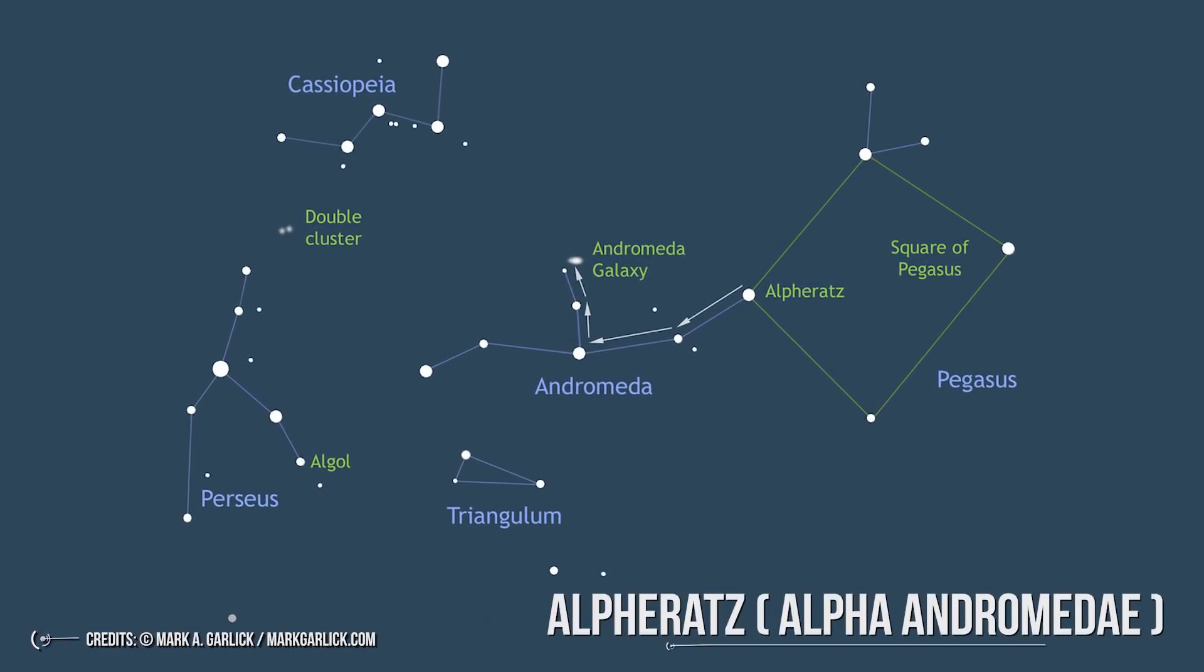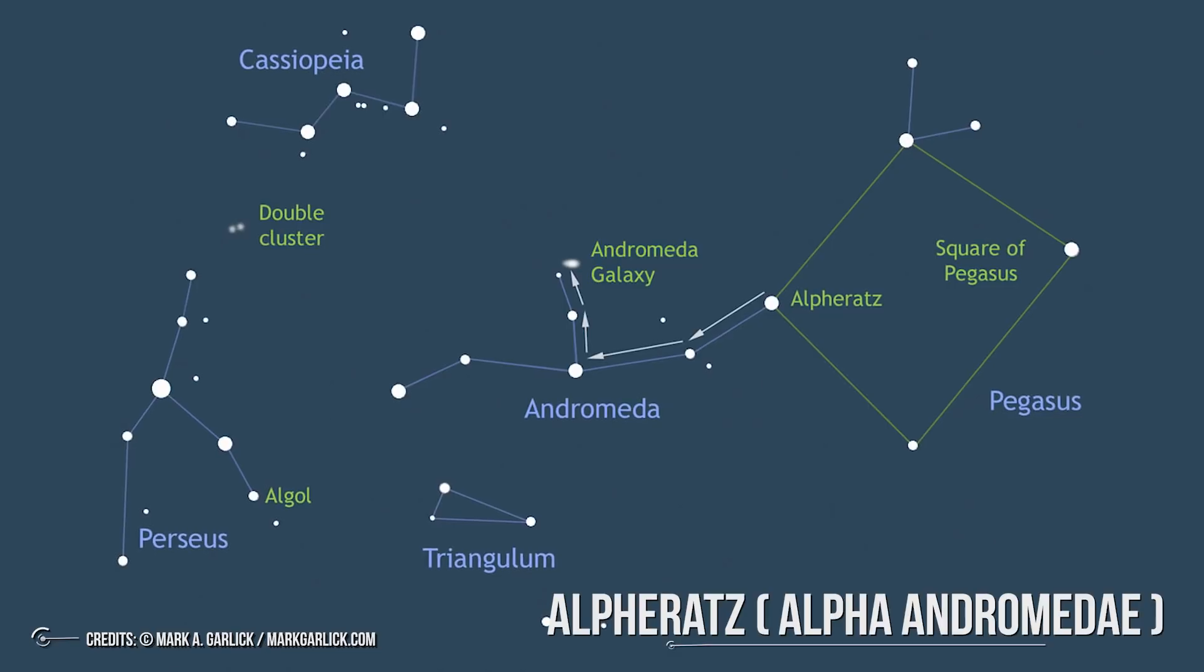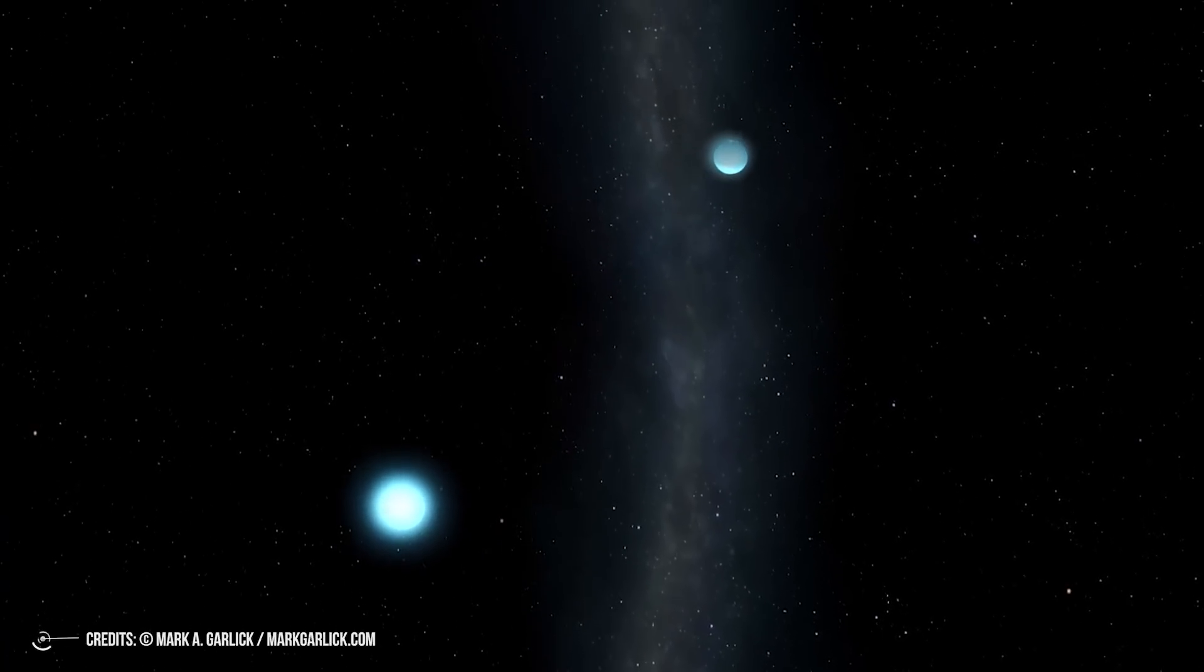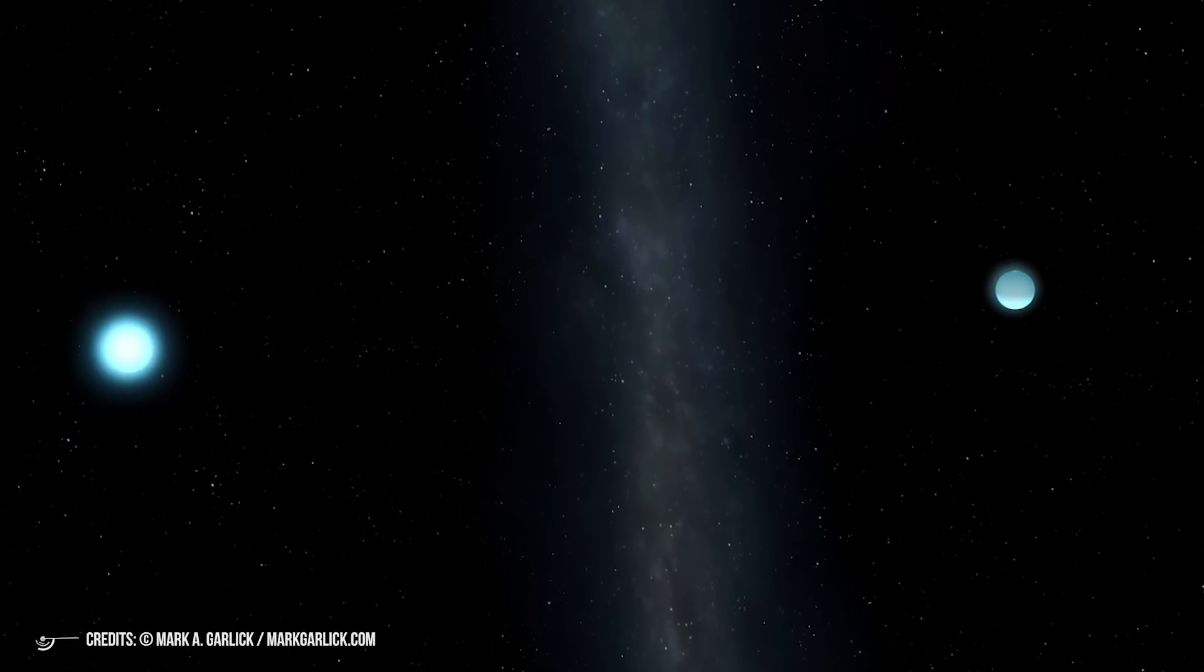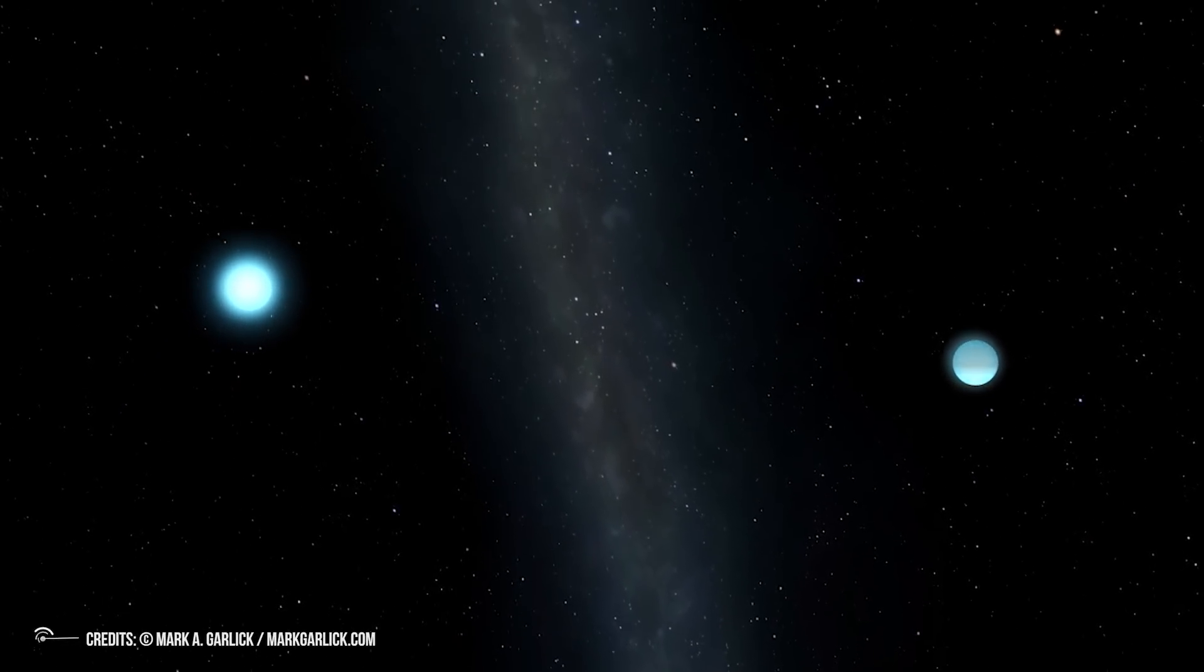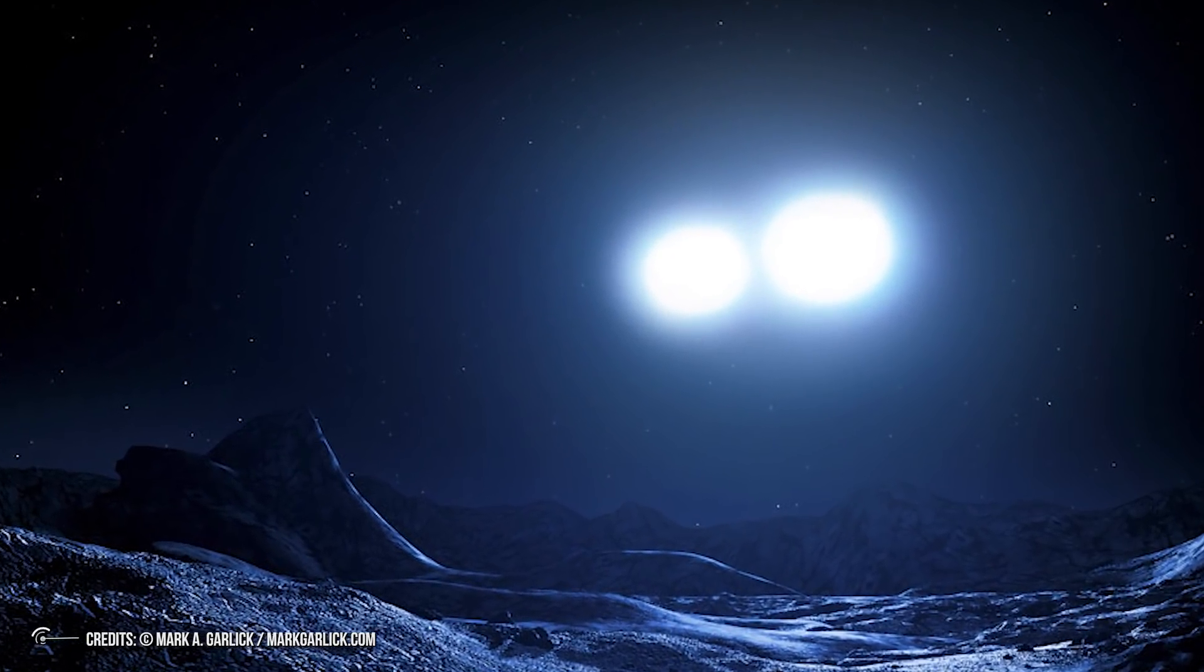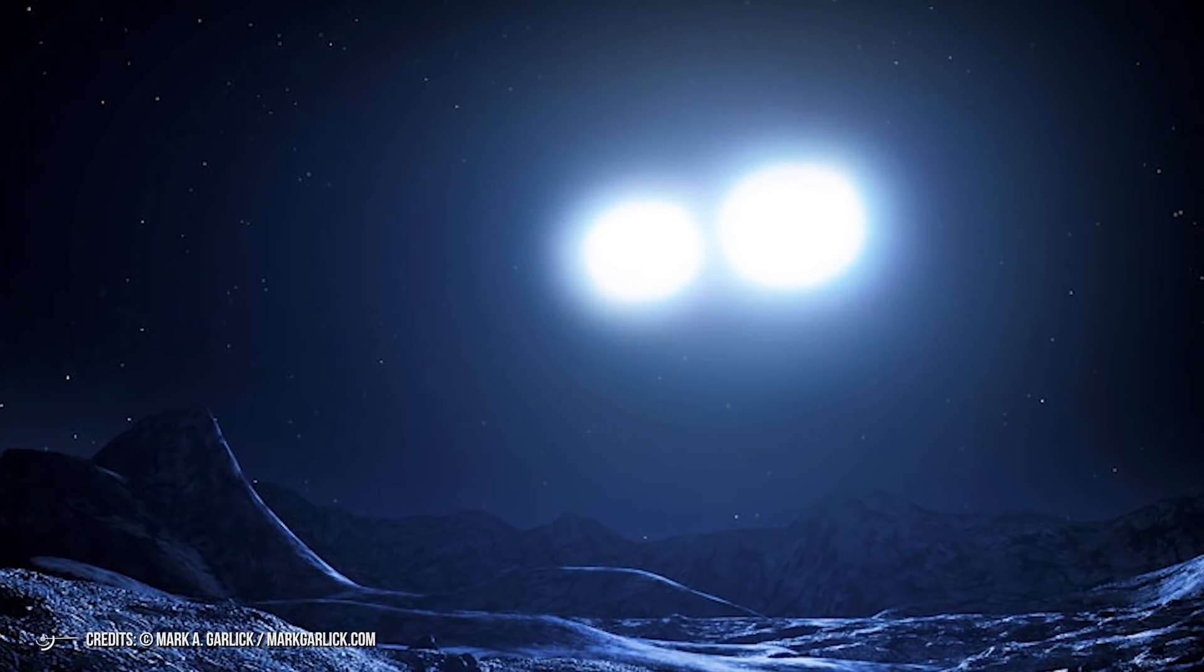Let's start with the brighter star: Alpheratz, also called Alpha Andromeda. Alpheratz is essentially Andromeda's head, but it is also part of the neighboring square of Pegasus. This star is located 97 light-years from Earth and is a so-called binary star because it consists of a system of two stars orbiting a common center of mass. The two components have different masses, and the bigger one has a unique chemical composition in terms of mercury and manganese. It is, in fact, the star with the highest levels of these two elements.